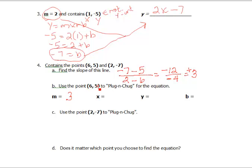I'm going to use the point 6, 5, so x is 6, y is 5, and b is what I don't know, so we plug and chug. So y is 5 equals m, which is 3, times x, which is 6, plus b.